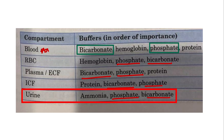Bicarbonate and phosphate buffers are present throughout the body — in blood, RBCs, plasma, ECF, ICF, and urine. In the blood, hemoglobin and protein are also present, so two additional buffer systems apply: hemoglobin buffer and protein buffer. Hemoglobin is itself a protein, and in RBCs the hemoglobin buffer is dominant. In plasma, protein buffer applies. In ICF, protein buffer also applies. In urine, the added buffer is ammonia. Bicarbonate and phosphate are the common buffers across all compartments.